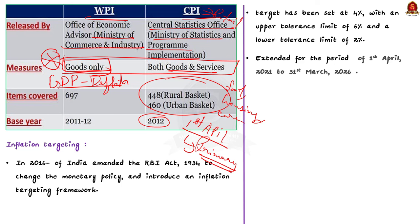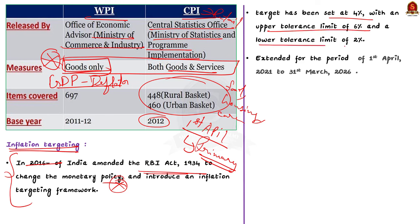An important concept is inflation targeting. In 2016, Parliament amended the RBI Act 1934, introducing an inflation targeting framework. The Union Government, in consultation with RBI, sets the inflation target with upper and lower tolerance levels for retail inflation. The target has been set at 4%, with an upper tolerance limit of 6% and a lower tolerance limit of 2%. The target and bands are revised every five years. Presently, the government has retained the inflation target at 4% with a tolerance band of plus or minus 2% for the Monetary Policy Committee of RBI for the period 1st April 2021 to 31st March 2026.